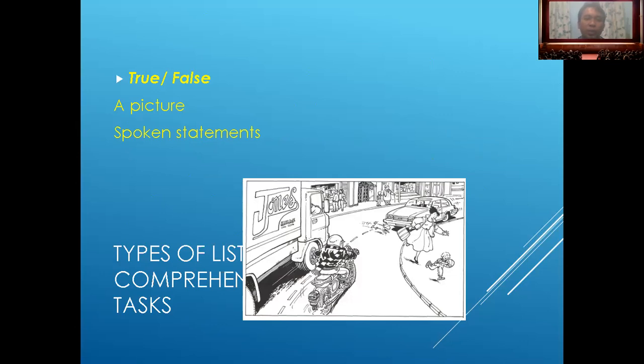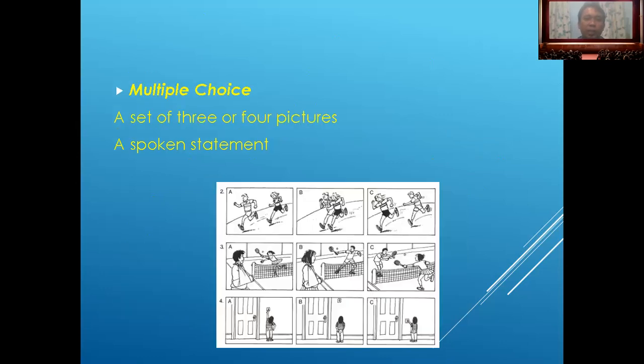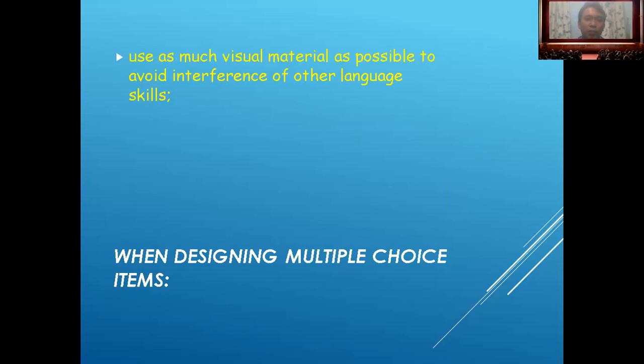For multiple choice, show a set of three or four pictures and present a spoken statement; students identify which one is true. When designing multiple choice items, use as much visual material as possible to avoid interference from other language skills. Keep the stem or question short. Use three instead of four options. Keep the language of the options simple.